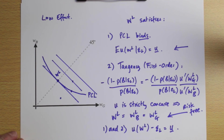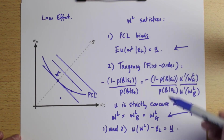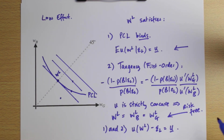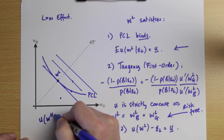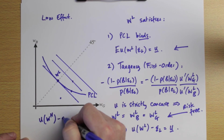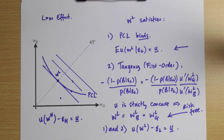When optimally implementing a high level of effort, you can essentially go through the same analysis replacing L with H everywhere. You get: U(WH) minus epsilon_H equals reservation utility. So under perfect information, optimally implementing both low and high effort yields the same two main conditions: the participation constraint binds and the contract must be risk-free. That's how the firm solves these optimal implementation problems.